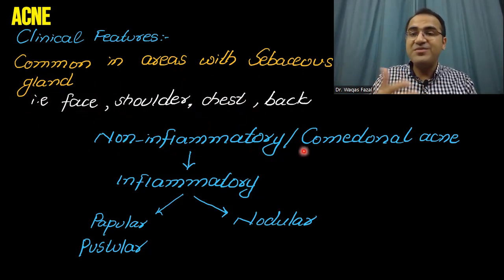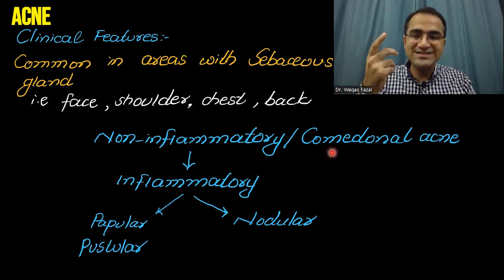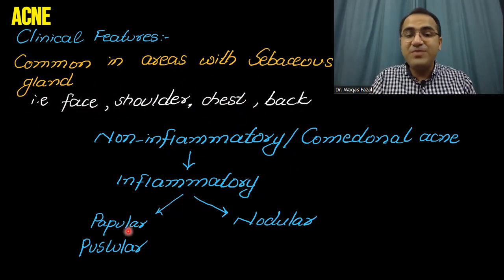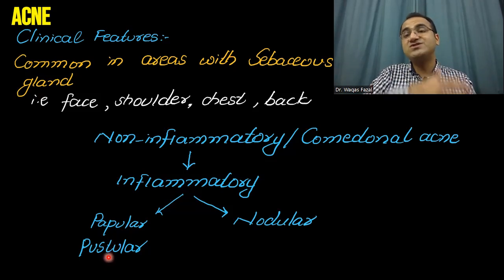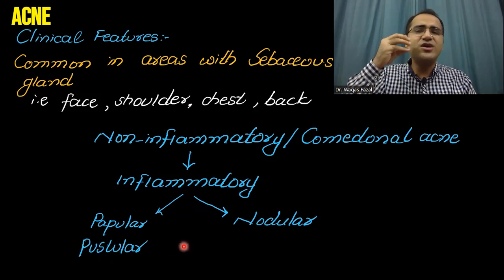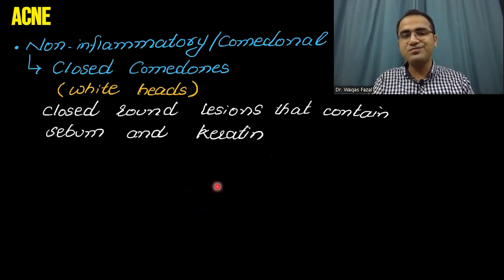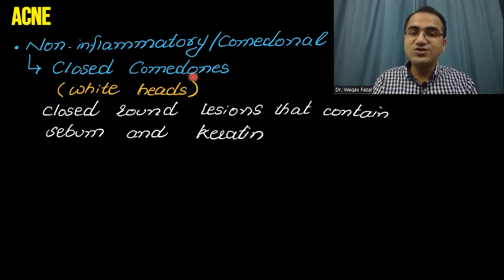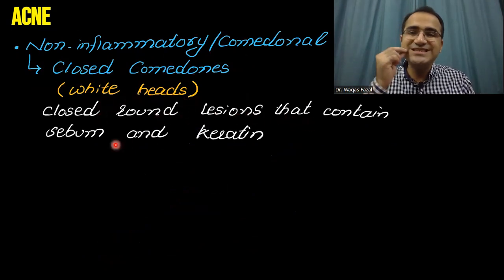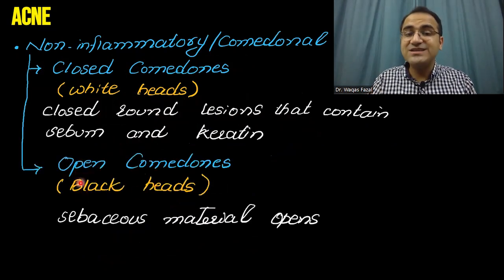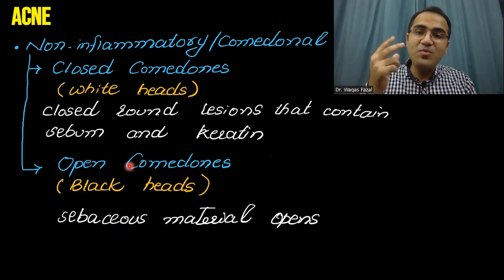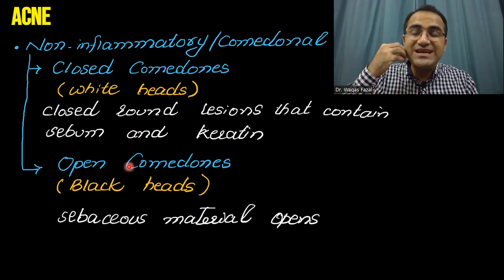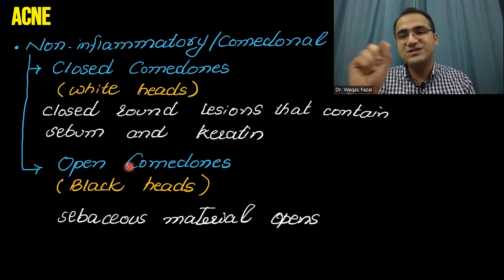Initially, acne starts as non-inflammatory or comedonal acne — the whiteheads and blackheads. Then Propionibacterium acnes proliferates in it and there is an inflammatory reaction resulting in papules and pustules. When these exceed greater than 5 millimeters with huge abscesses, that is called nodular acne. Closed comedones are whiteheads — closed round lesions containing sebum and keratin. Open comedones are blackheads — when the comedone is opened and sebum comes in contact with air, it oxidizes and appears as a black spot on the skin.